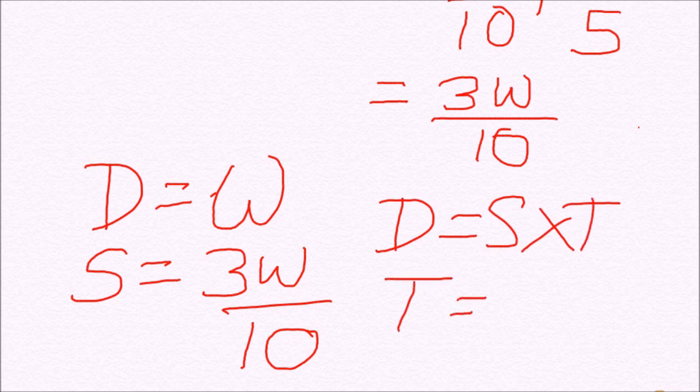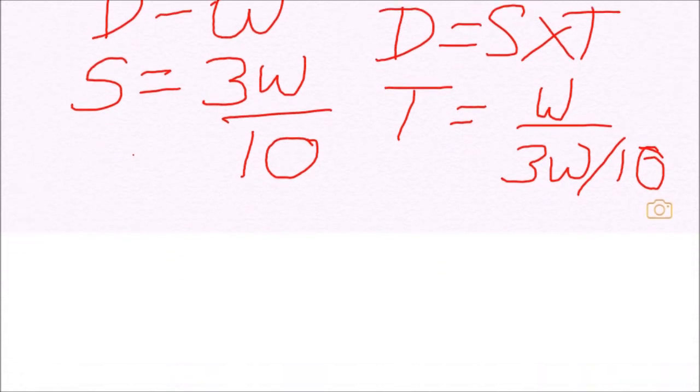The time taken by A and B together is W upon 3W by 10. That is 10 by 3 days.